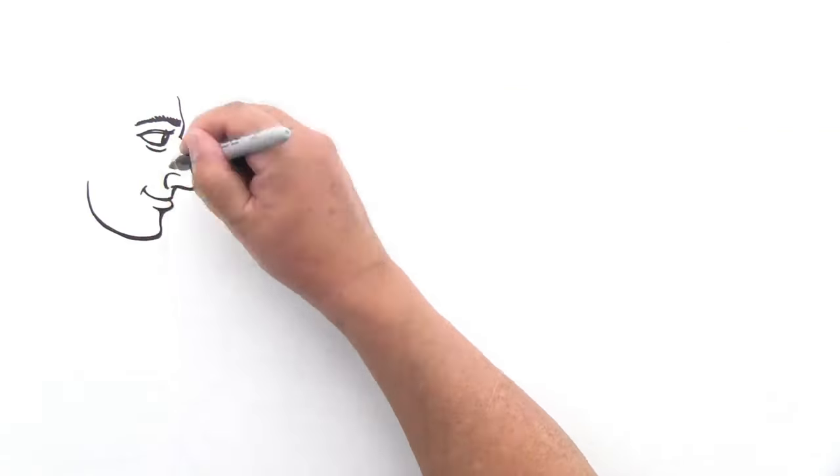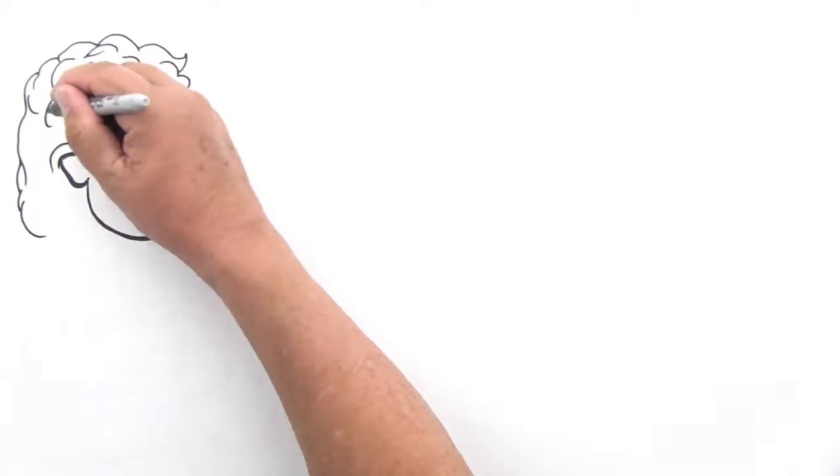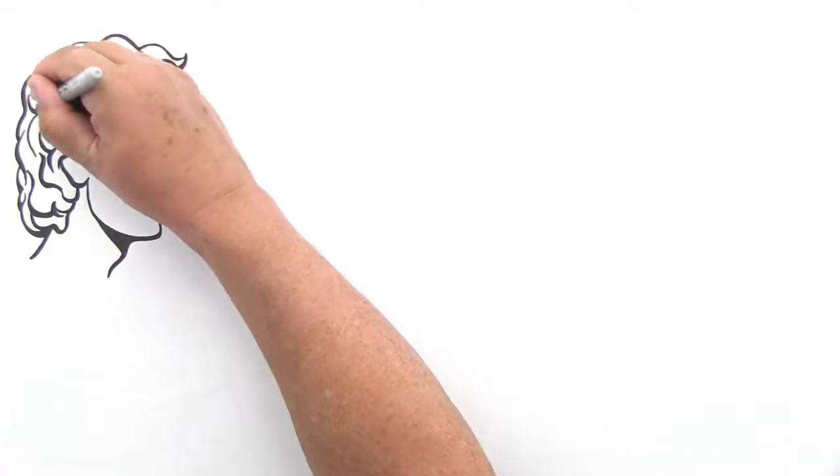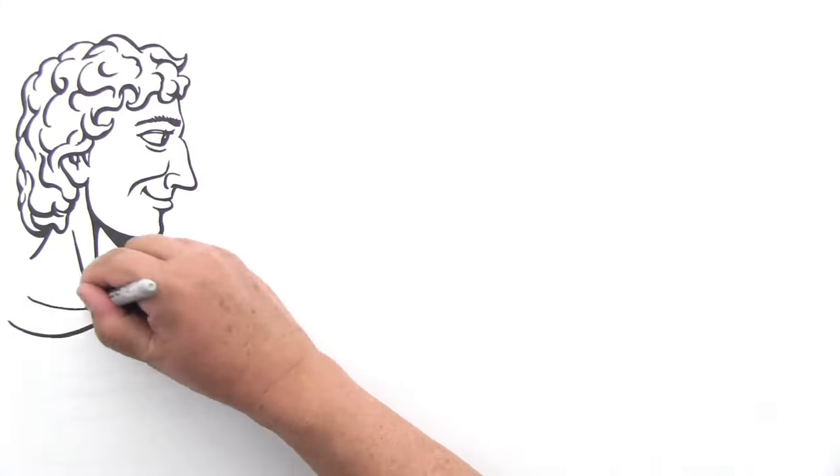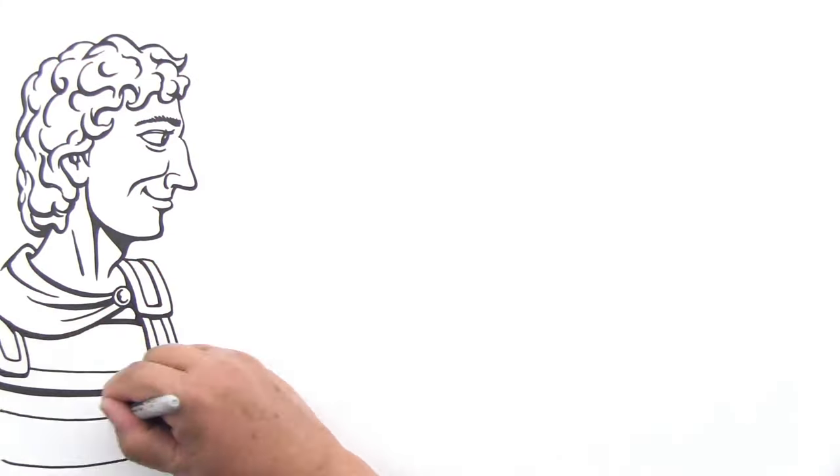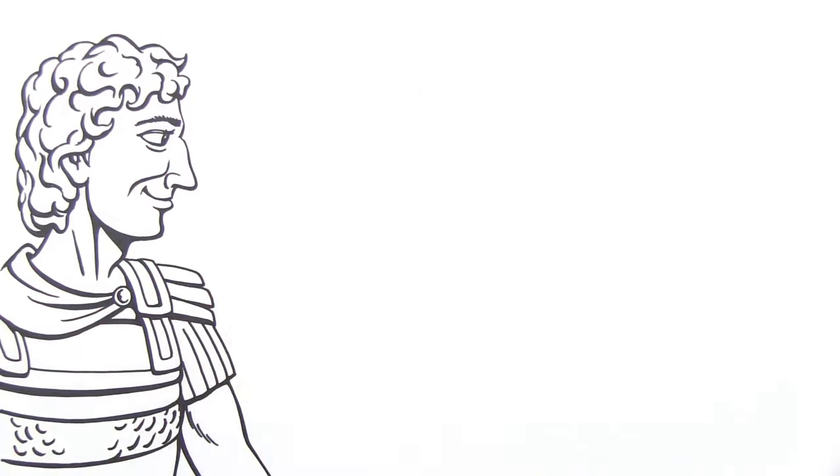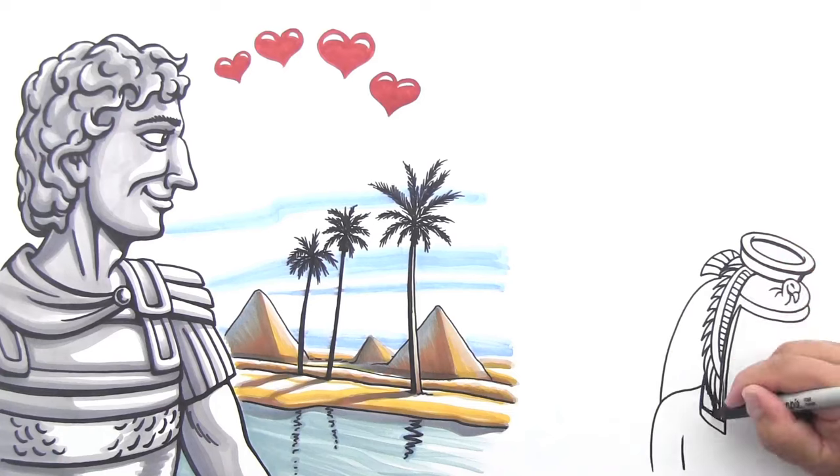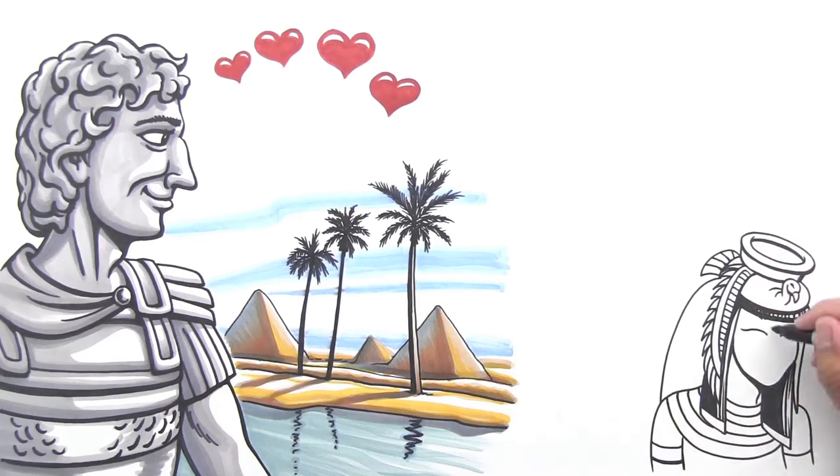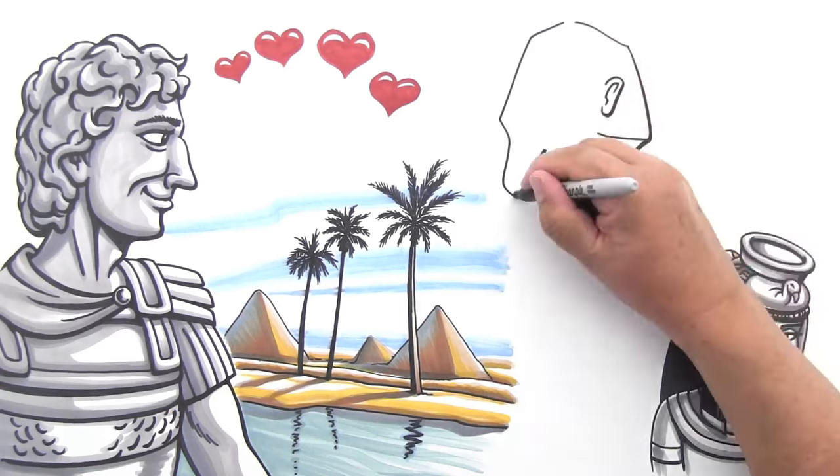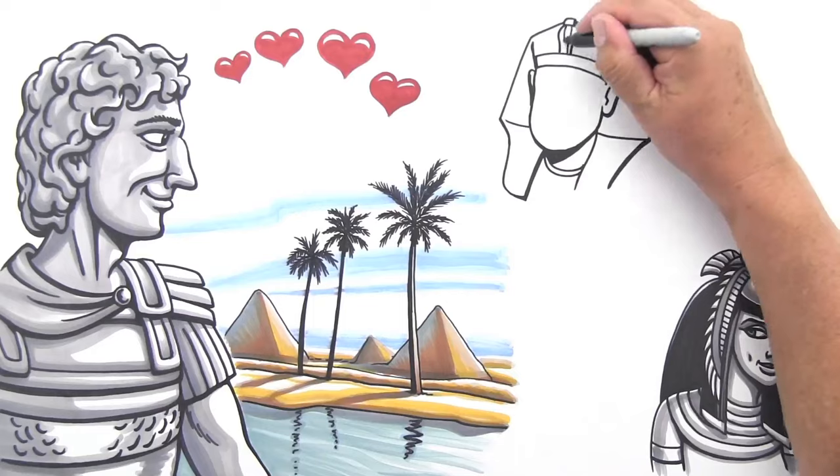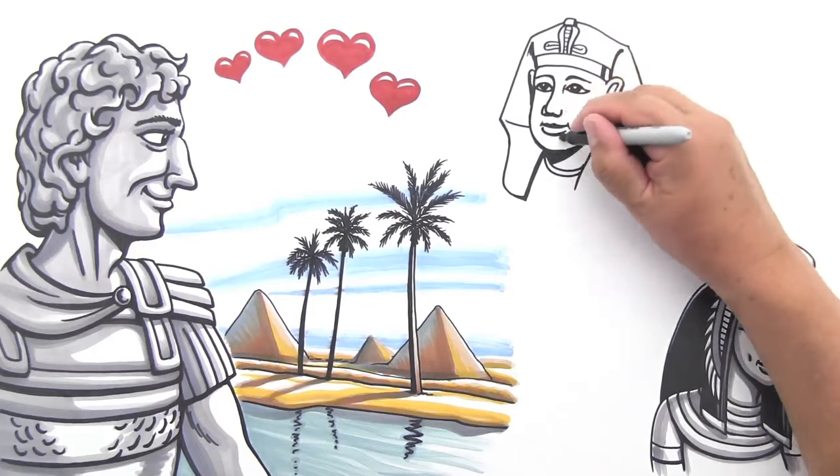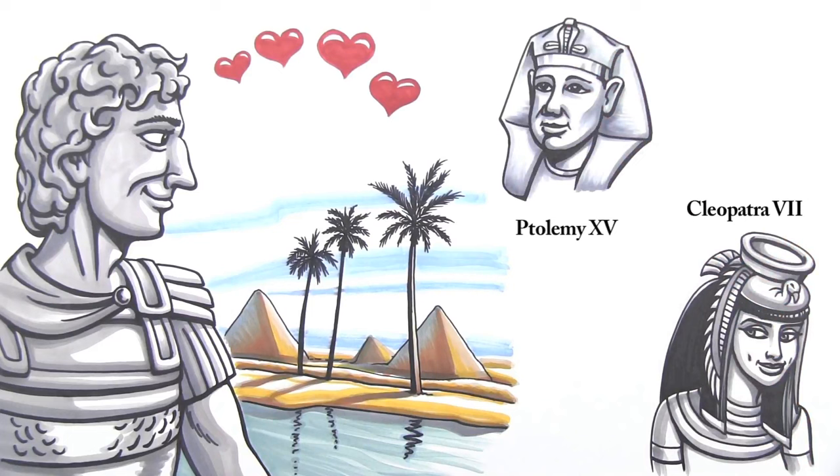Alexander the Great admired the Egyptian kingdom so much that he decided to conquer it in 332 BC. While in Egypt, he founded the city of Alexandria on the northern coast of Egypt and installed his general Ptolemy as Pharaoh. Greek elements were introduced into the arts. The Ptolemaic dynasty lasted 275 years and included several Ptolemies and Cleopatras. The most famous of these was Cleopatra VII, whose son, Ptolemy XV, was the last pharaoh of Egypt. In 30 BC, Rome conquered Egypt.